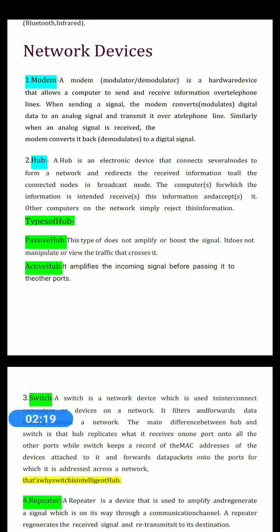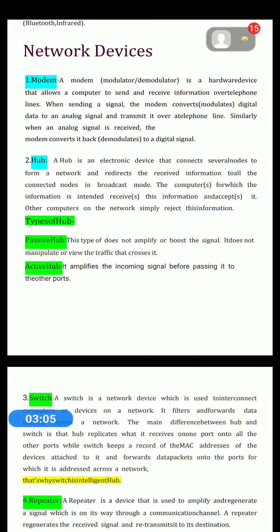There must be a device — hardware or software — which can convert digital signal into analog signal and analog signal back into digital data. The process of converting digital data into analog signal is known as modulation, and conversion of analog signal to digital signal is known as demodulation. A device which performs this task is known as a modem. A modem is a hardware device that allows a computer to send and receive information over telephone lines. When sending, the modem converts digital data into analog signal; when receiving, it converts the analog signal back to digital.